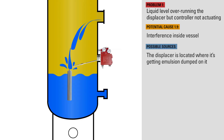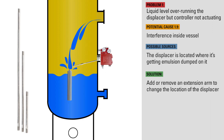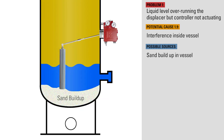If the displacer is located where it's getting emulsion dumped on it, this could hold the displacer down and keep the controller from actuating. To remedy this, if there's room in the vessel, add or remove an extension arm to change the location of the displacer. If there's a lot of sand in your system, it can build up inside the vessel over time to the point where it restricts the downward movement of the displacer. In this case, you'll need to shut in the vessel and remove the sand.